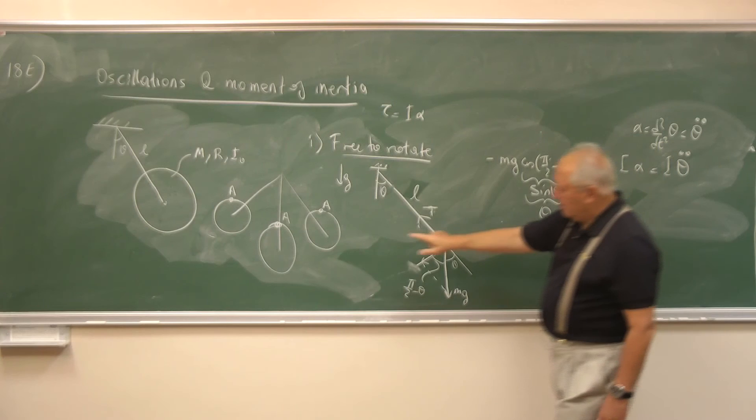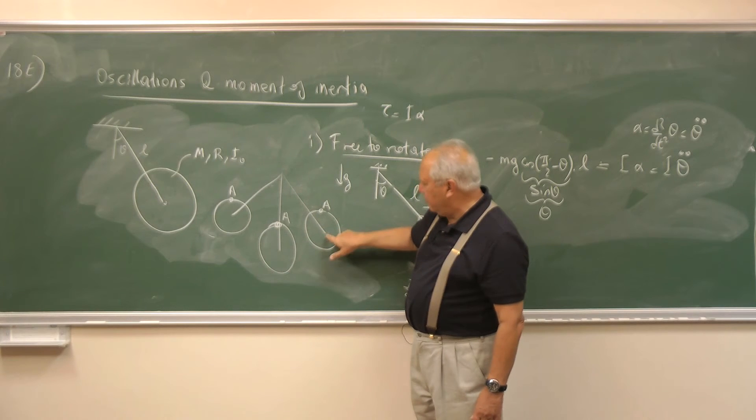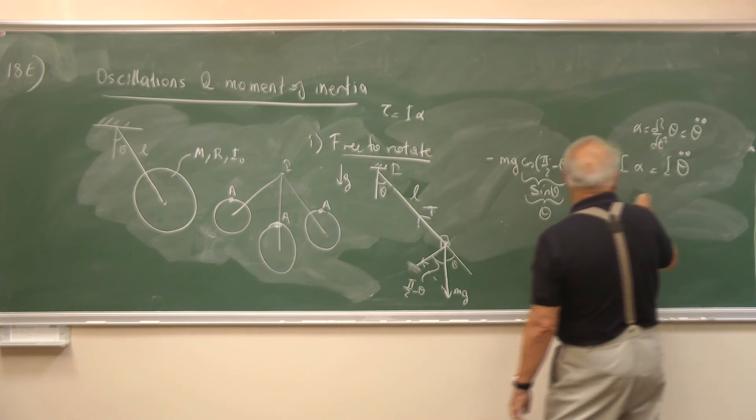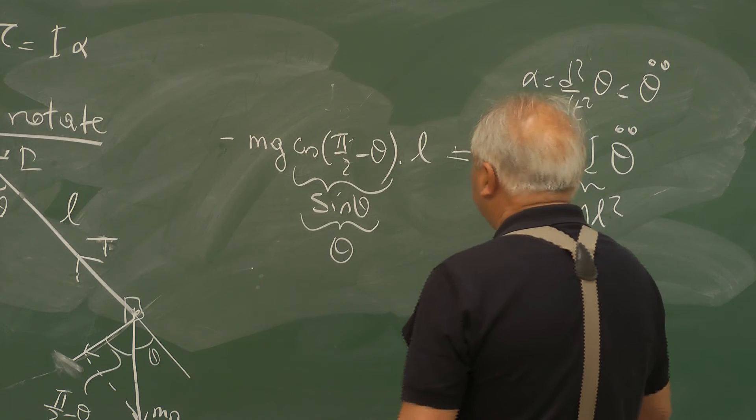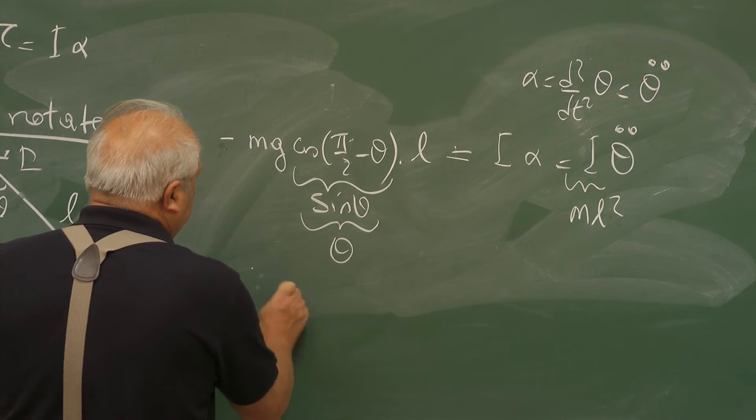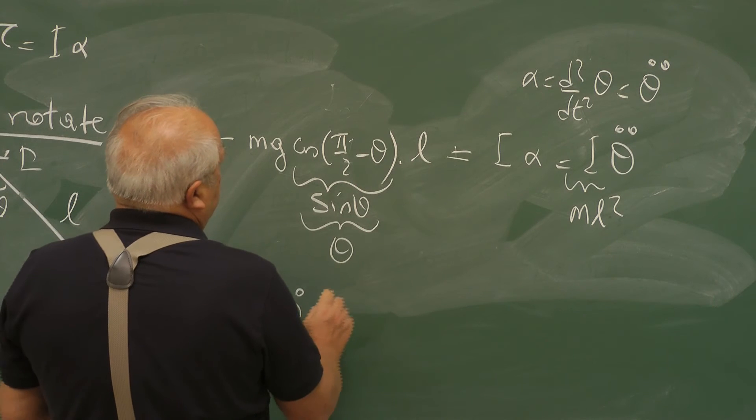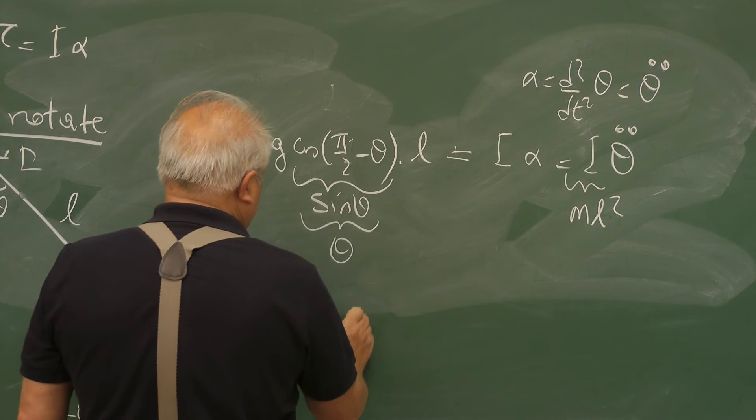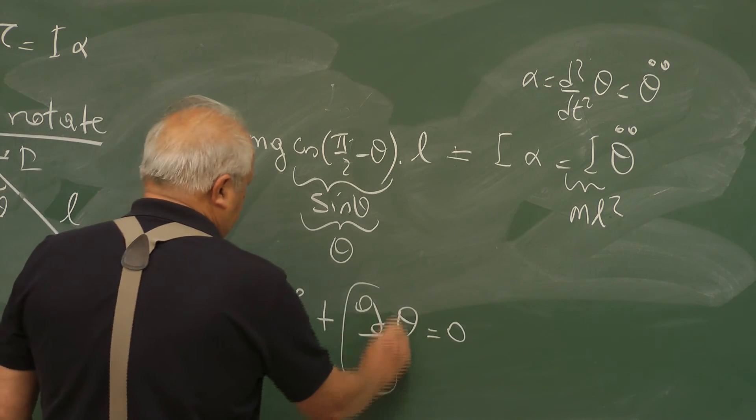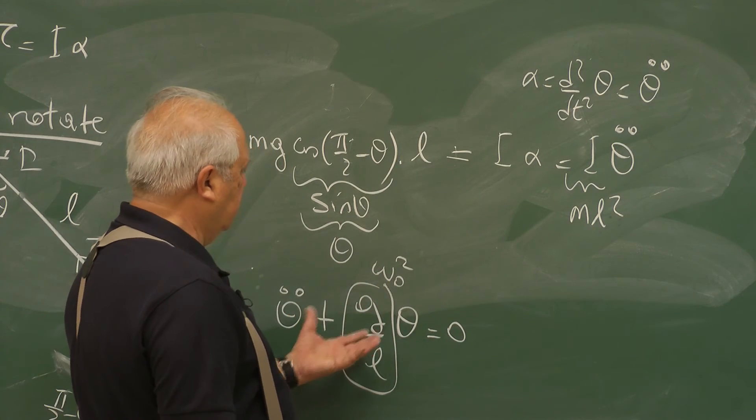So what is I for this case? It is free to rotate, so there is no rotation about the center of mass. It's only the rotation of the center of mass about this point P, so it is ML squared. So theta double dot, if I divide by ML squared, and take this one to the right, plus ML's cancel, plus G over L theta is equal to zero. If you wish, I can call it omega zero squared.